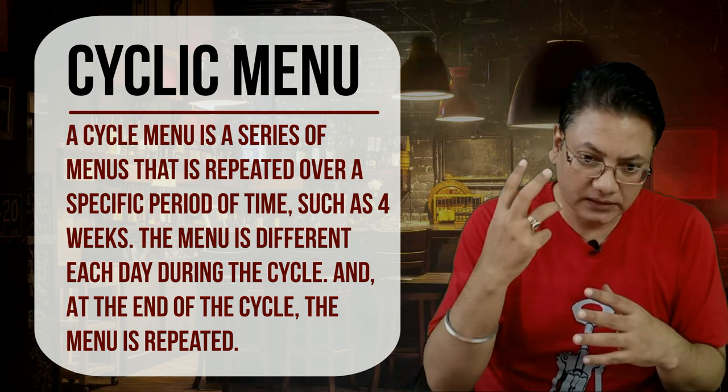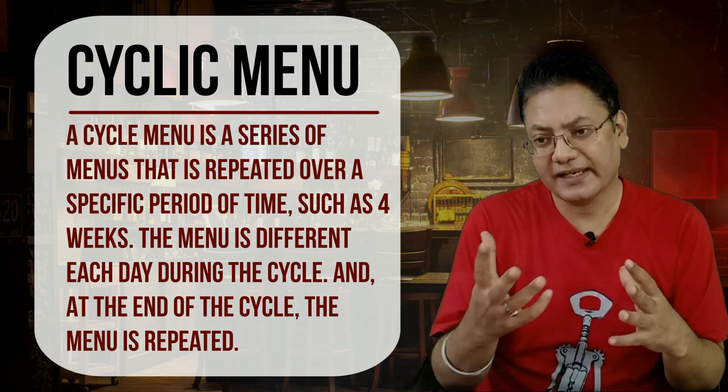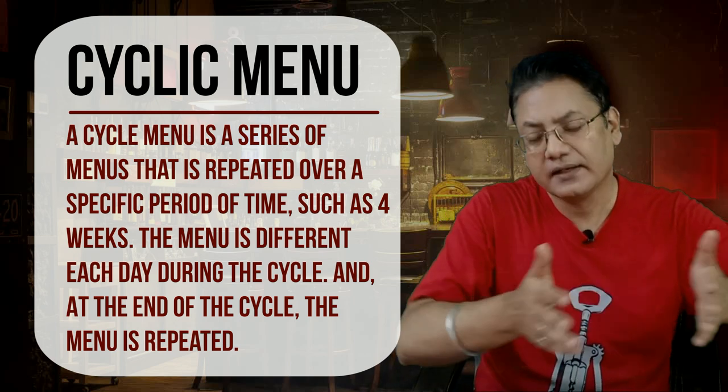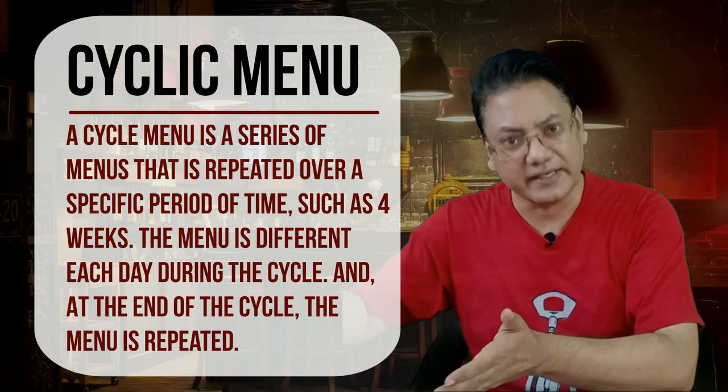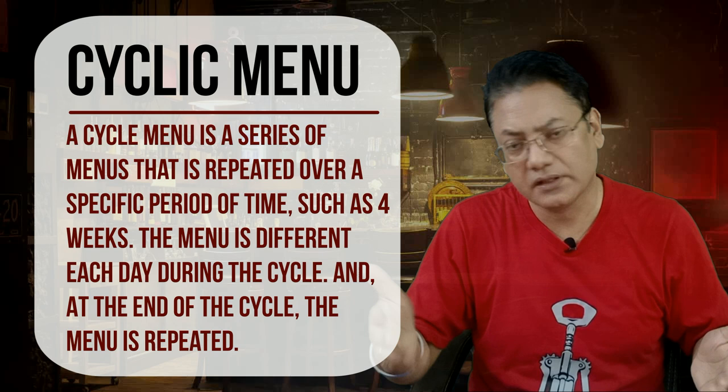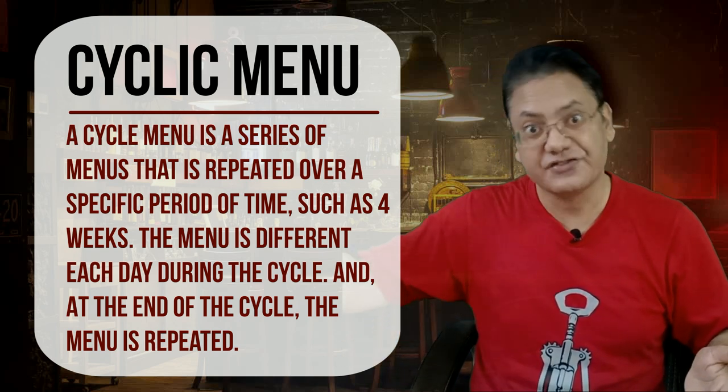The cyclic menu is more prevalent in hostel messes or college canteens. It consists of a set menu for each day of the week — Monday, Tuesday, Wednesday, and so on — and the menu cycle repeats itself, running for a month, two months, or quarterly before the menu is changed. All these variants — the plat du jour, carte du jour, banquet menu, buffet menu, and cyclic menu — are extensions of the table d'hôte because they are all fixed menus sold at a fixed price.